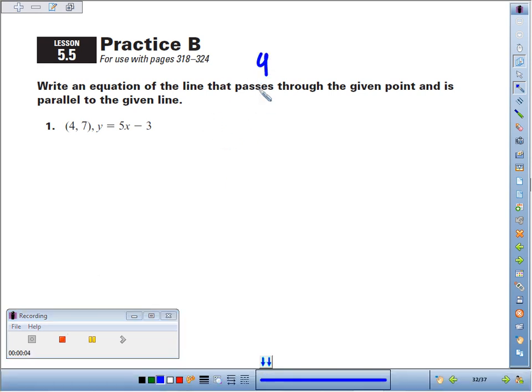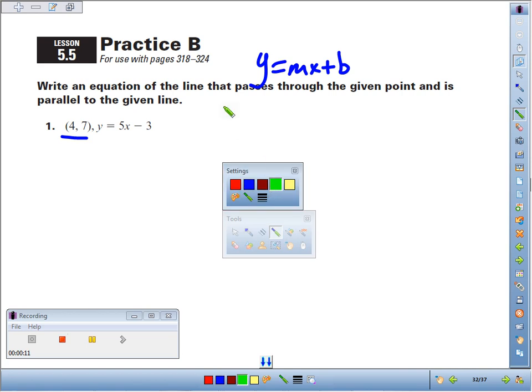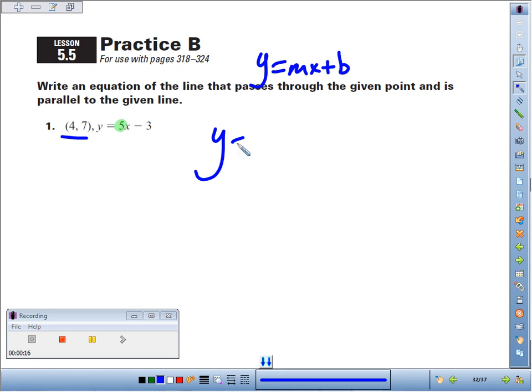Number one, we're going to write an equation of the line. We want a slope-intercept equation that goes through this point and is parallel to this line. Now, keep in mind, if it's parallel to this line, two lines are parallel if they have the same slope, and the slope in this line is 5. So my new equation also has to have a slope of 5.